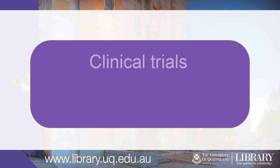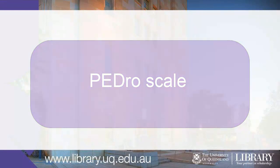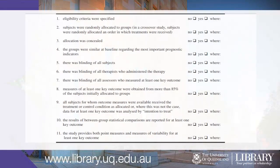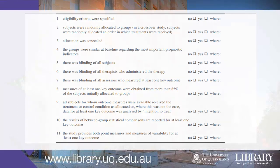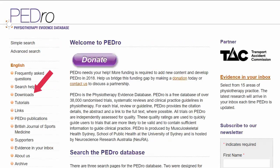Trials, but not reviews or guidelines, are rated with a checklist called the PEDro scale. The PEDro scale considers two aspects of trial quality: namely the believability, or internal validity, of the trial, and whether the trial contains sufficient statistical information to make it interpretable. You can read more about the PEDro scale on the PEDro homepage — click Downloads, then PEDro scale.